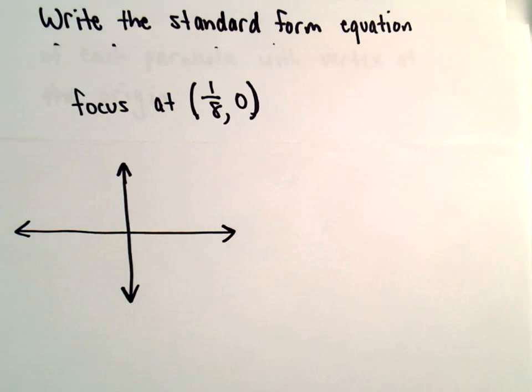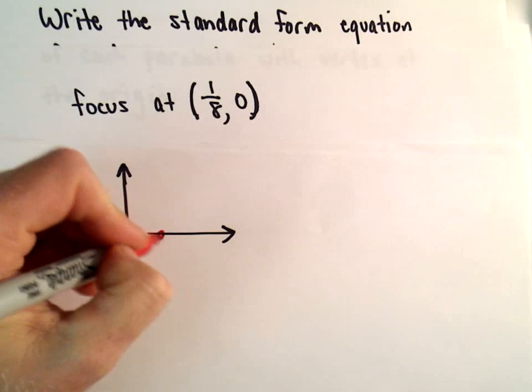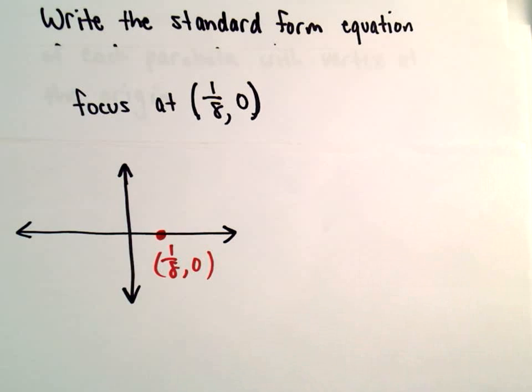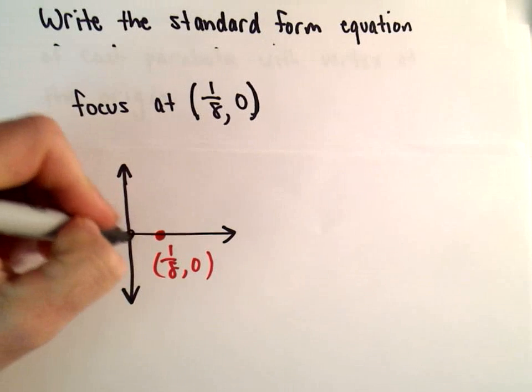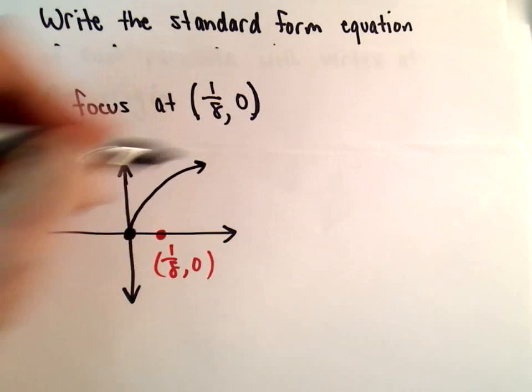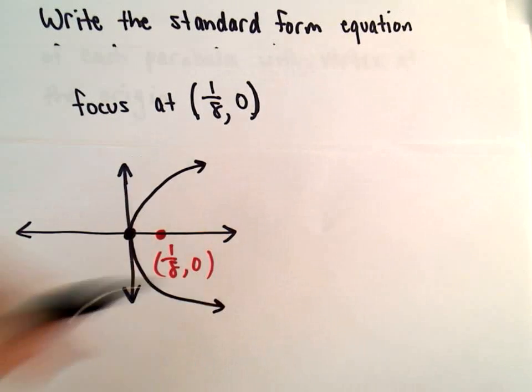We know the focus here is at the point one-eighth comma zero, that's given, and we're assuming that the vertex is at the origin. So I know that my parabola in this case is going to open to the right.